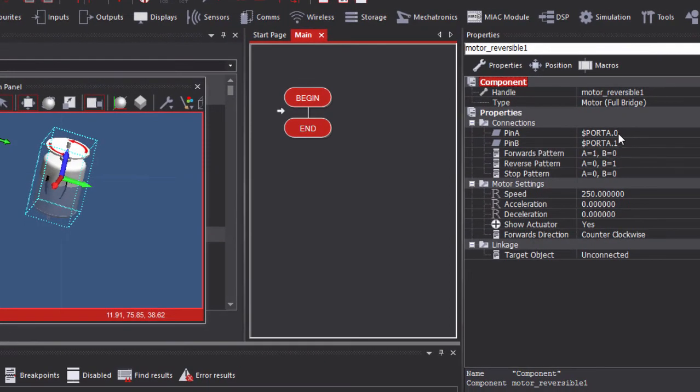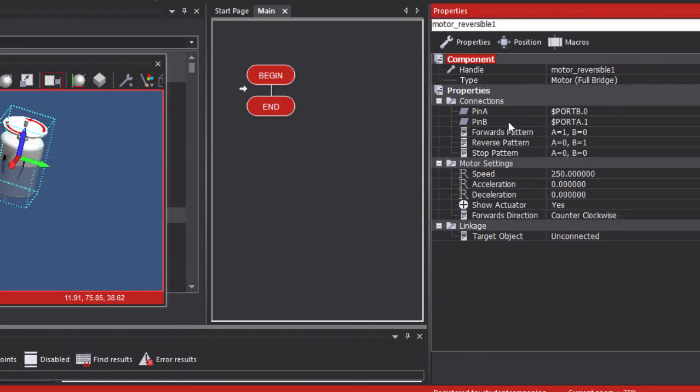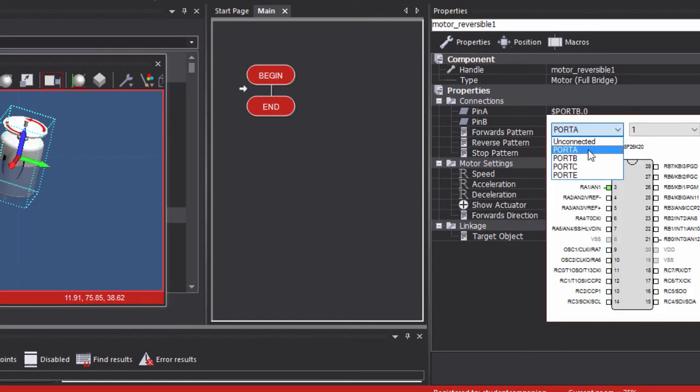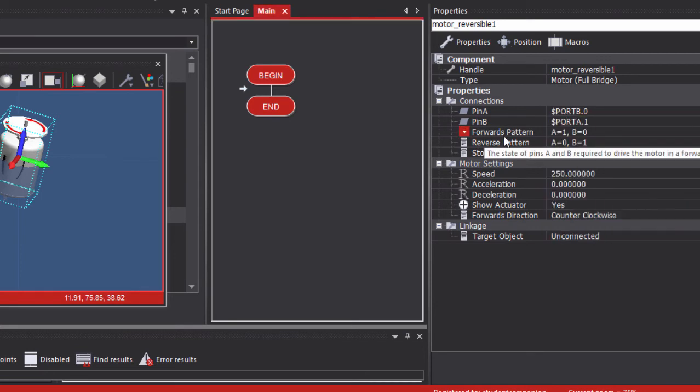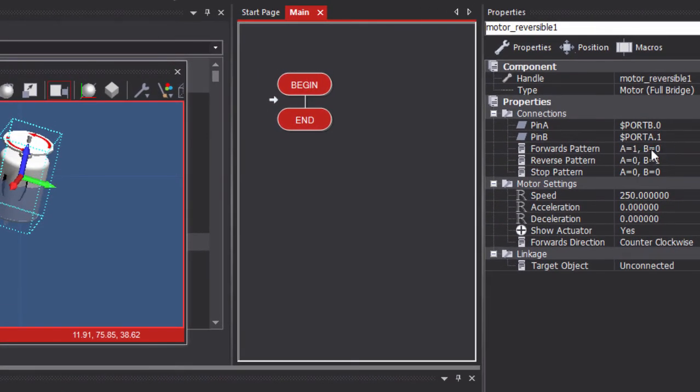To rotate our motor in the forward direction, A is going to be 1, B is going to be 0. To reverse the direction, A is going to be 0, B is going to be 1. And to stop, A is going to be 0 and B is going to be 0. Forward direction, let's say clockwise. OK. Then in our while one loop, component mechatronics. Rotate clockwise for 5 seconds - this is just a comment. Start forward.